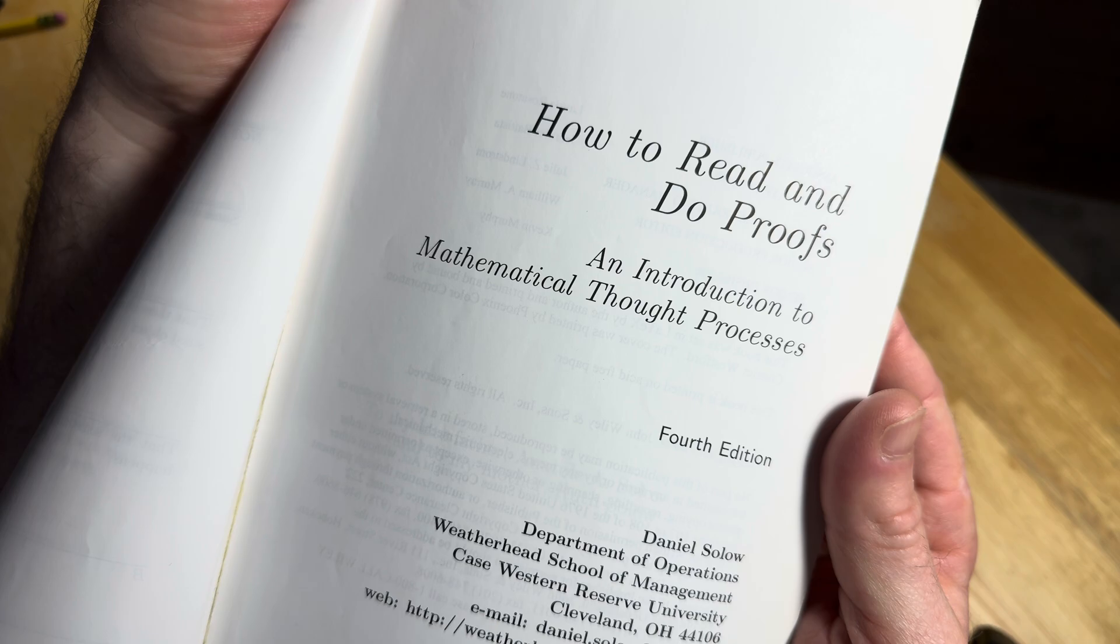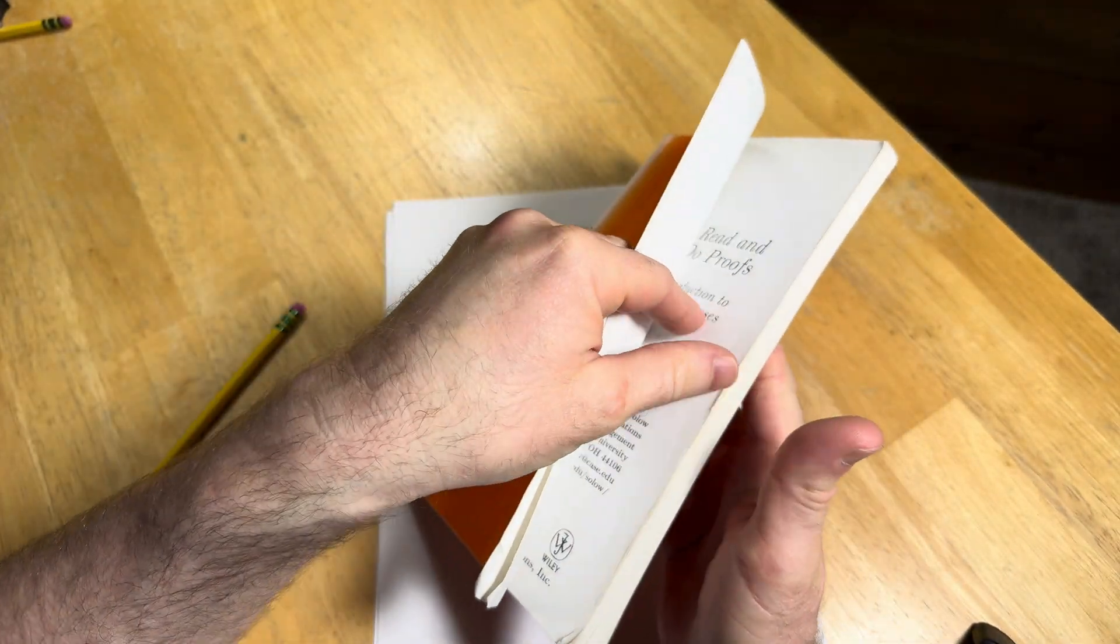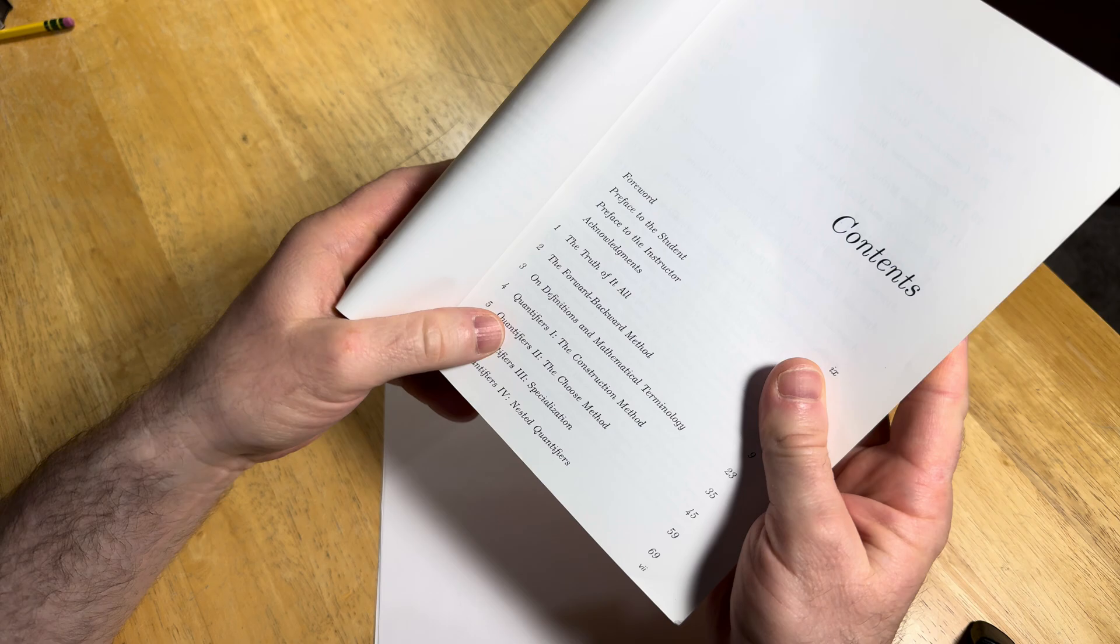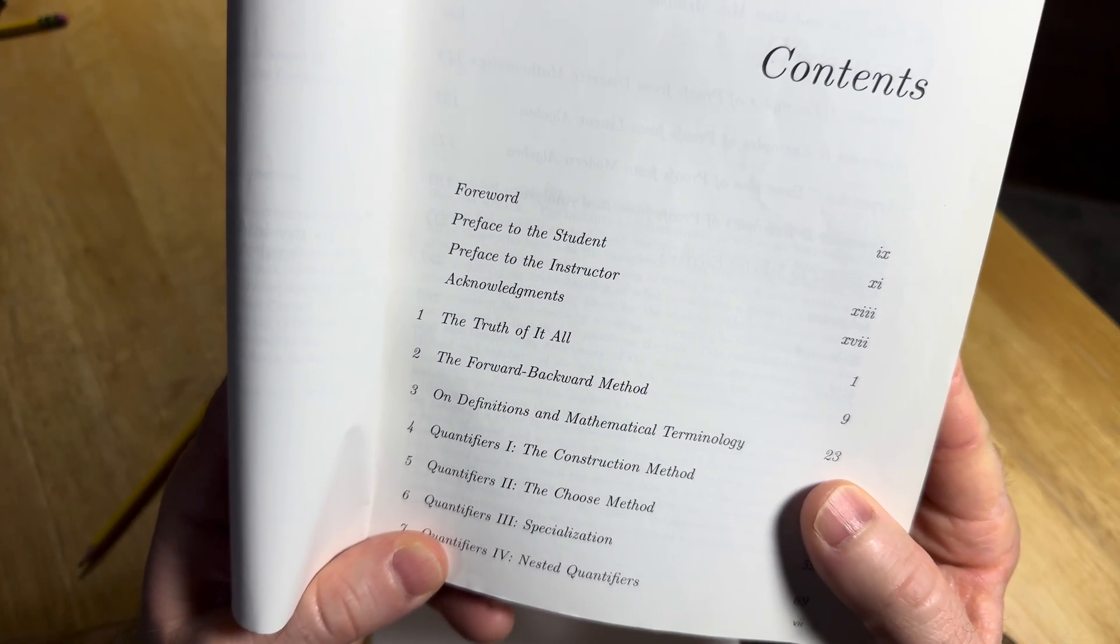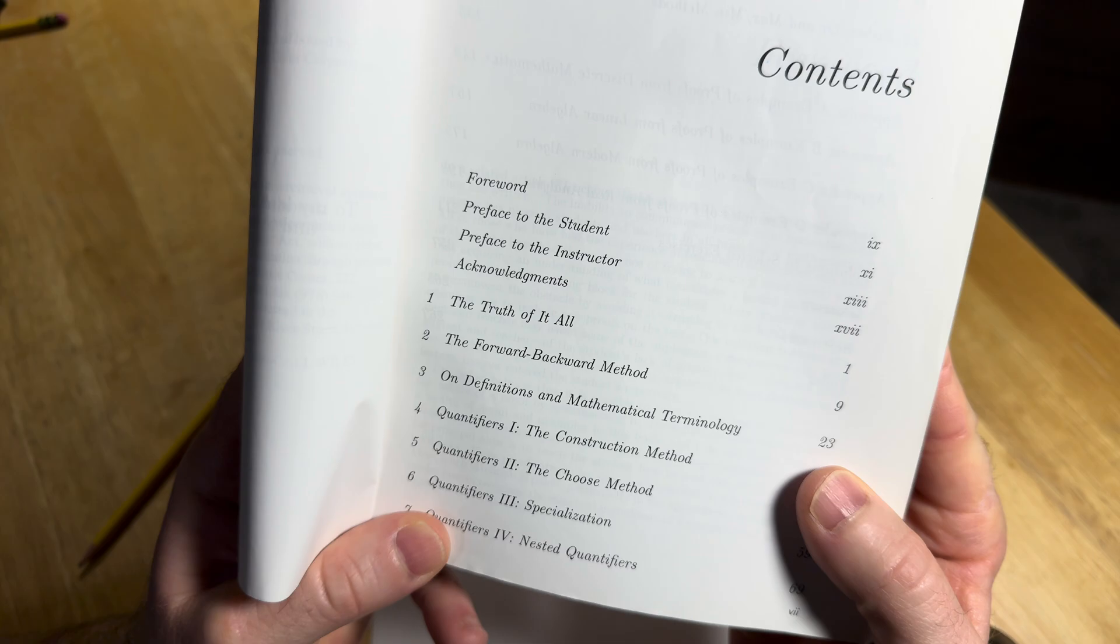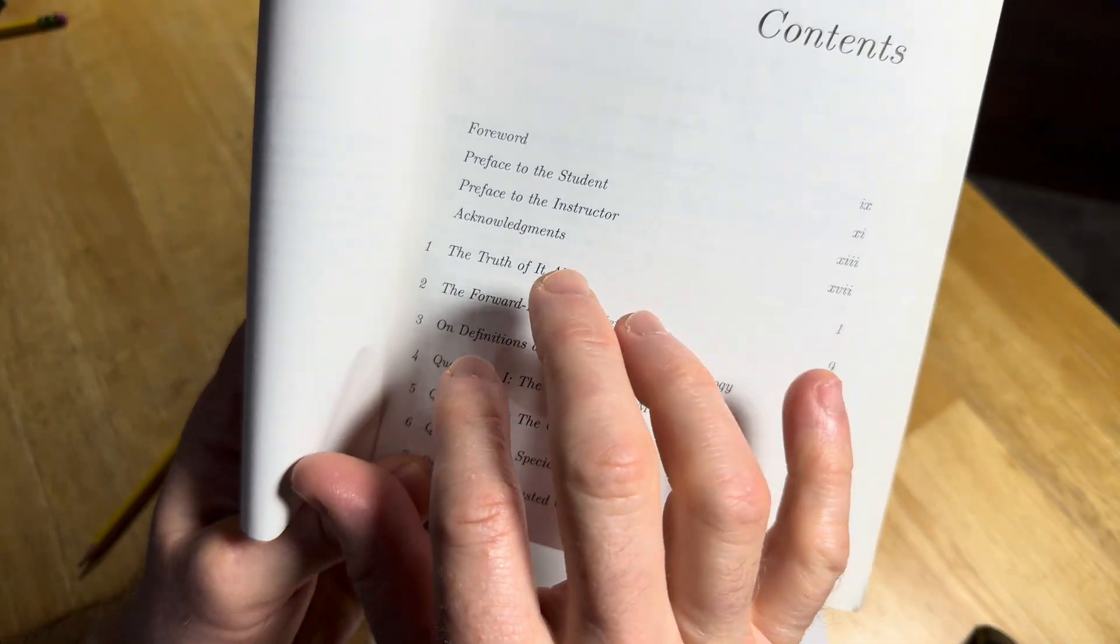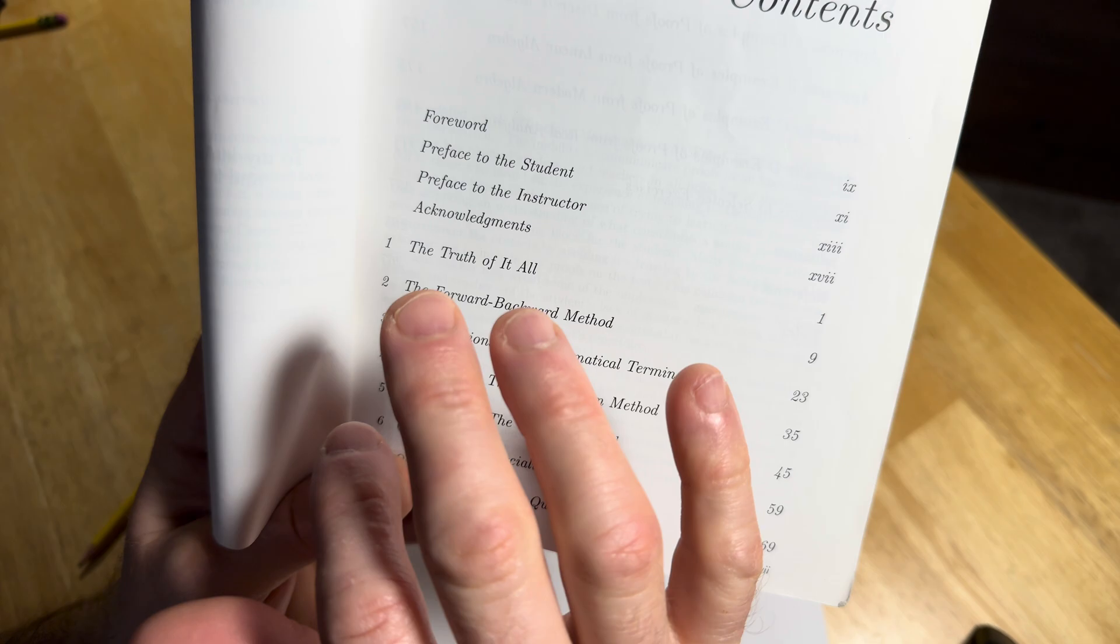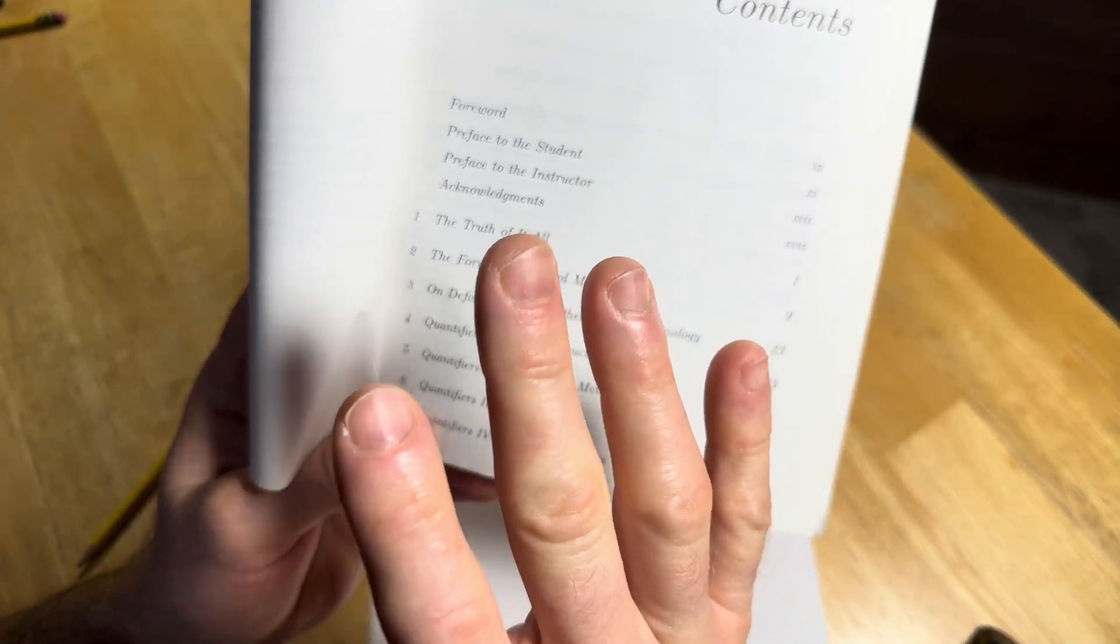How to Read and Do Proofs: An introduction to mathematical thought processes. This is the fourth edition. And here are the contents. So there's a nice preface to the student, a preface to the instructor, some acknowledgements, and then here are the individual chapters. I want to emphasize that this book is really fun to read and it's very easy to read which makes it a great book.